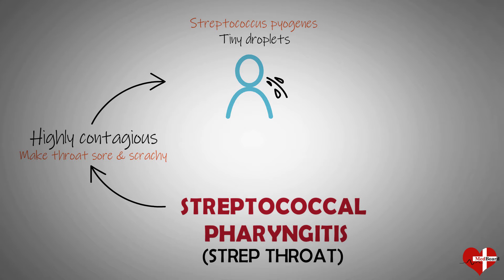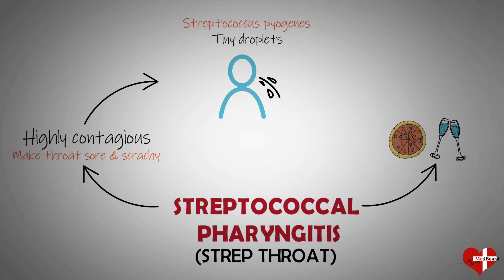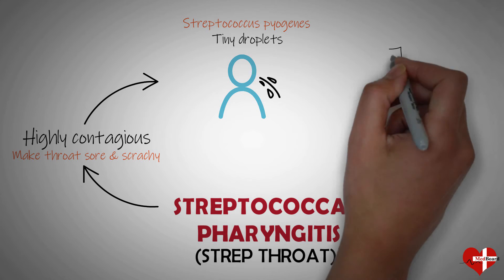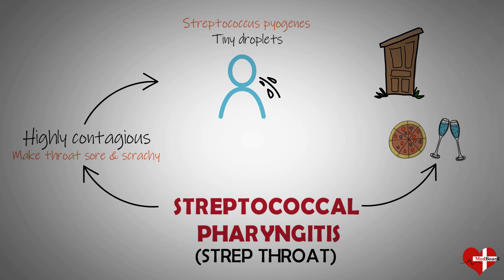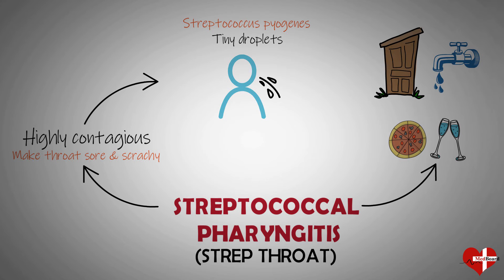Along with coughing and sneezing, strep throat can be spread when you share food or a drink with someone who's infected. You can also get strep throat by coming into contact with an object contaminated with group A strep bacteria, such as a doorknob or faucet, and then touching your eyes, nose, or mouth.